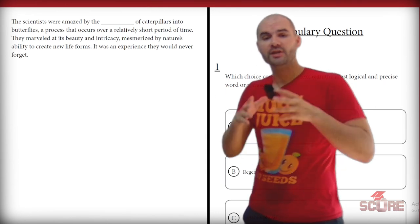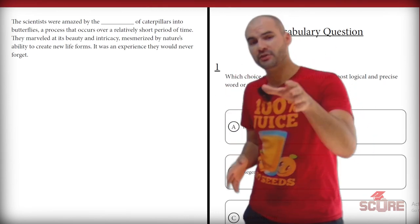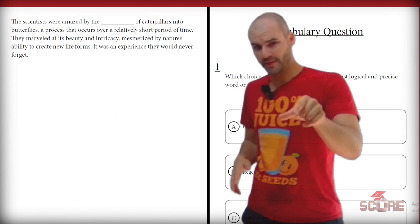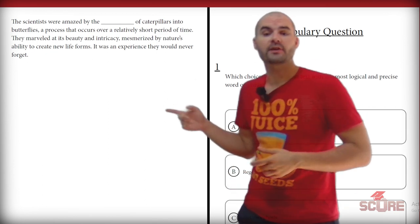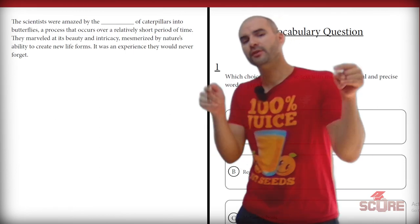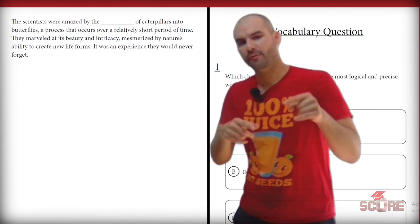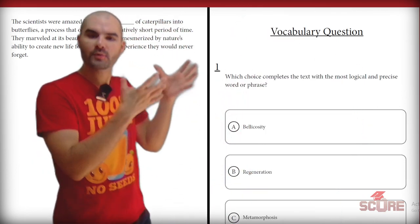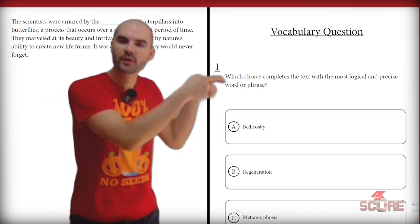Today we're going to do five vocabulary questions in less than five minutes so that you can get better at vocabulary on the SAT. Let's start with this one right here. This is our vocabulary question one from set four of our questions, which you can find in the folder that is linked in the description below if you want to follow along.